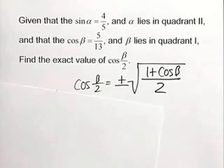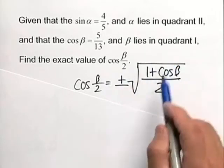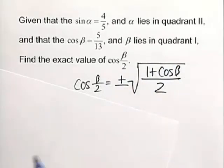First, let's look at the formula. We have cos(β/2) = ±√[(1 + cos β)/2].